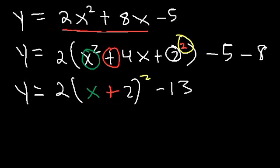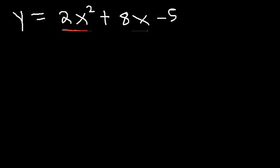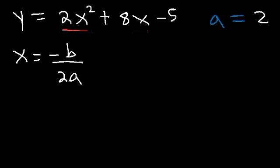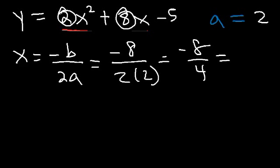Now let's use the other technique to get the same answer. a is the number in front of x squared, so a is equal to 2. Now let's find the x-coordinate of the vertex, which is negative b divided by 2a. b is the number in front of x, which is 8, and a is 2. So this is negative 8 divided by 4, so x is negative 2.